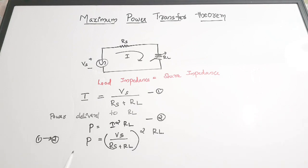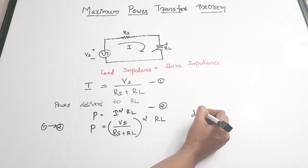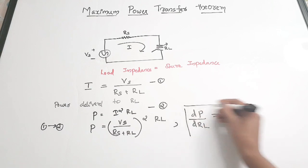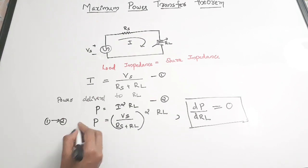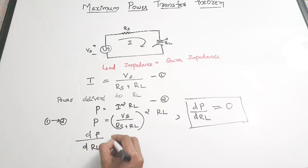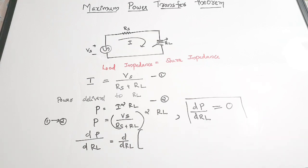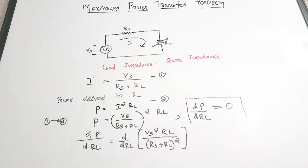In order to find the value of RL, we differentiate this power equation with respect to RL and equate it to zero. So we take dP/dRL = 0. The term we differentiate is P = Vs²·RL / (Rs + RL)², and differentiating gives us dP/dRL = Vs²·RL / (Rs + RL)².